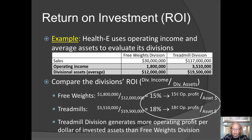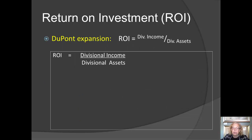The problem with this is that it doesn't tell us why these two divisions are performing differently. There are two possibilities: one is that the treadmill division is better at generating profit out of each dollar of sales, and the other is that the treadmill division is better at using its assets to generate profit. Let's see if we can take those two issues apart and figure out why the treadmill division is performing better. To do this, we're going to use what's called the DuPont Expansion.